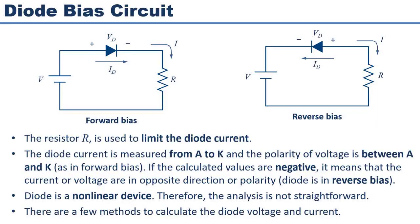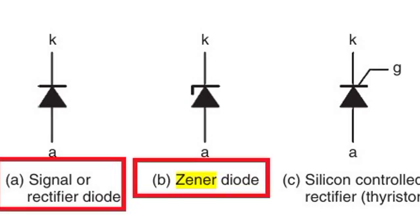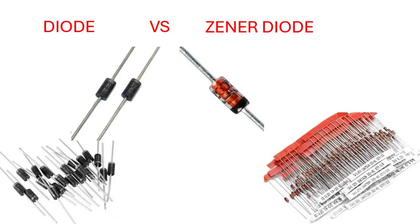What is a normal diode? A diode is like a one-way valve for electricity. It allows current to flow in only one direction while blocking it in the other. Here's the symbol of a normal diode, and this is how it works in a simple circuit.